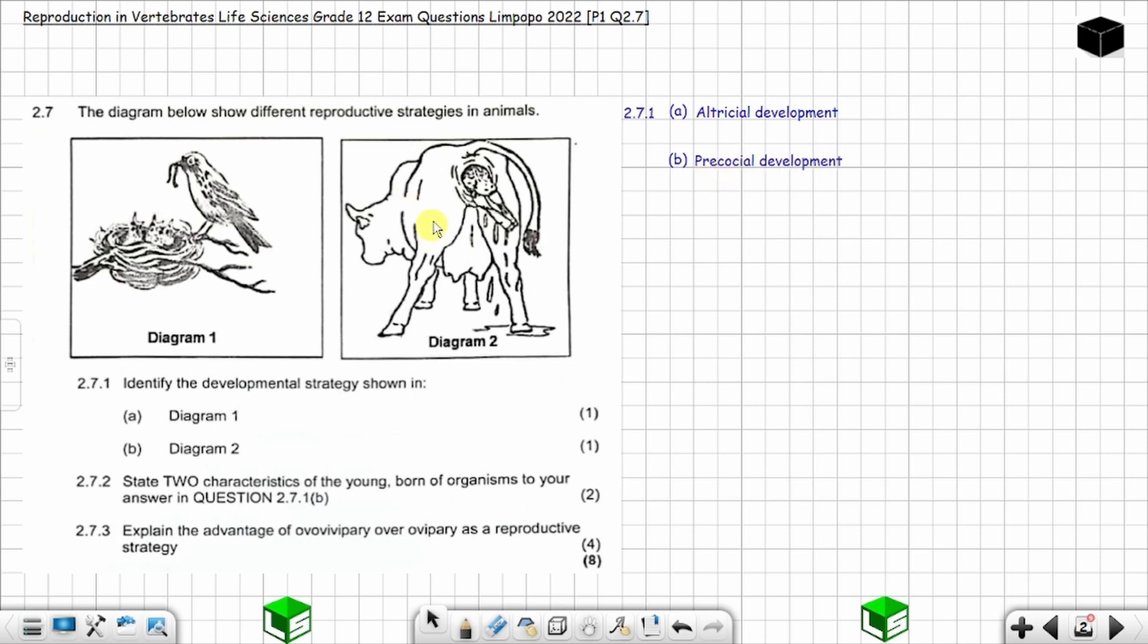Now question 2.7.2: state two characteristics of the young born of organisms to your answer in question 2.7.1(b). These are precocial young ones. You have to state the two characteristics that you know about the young which are born with precocial development.